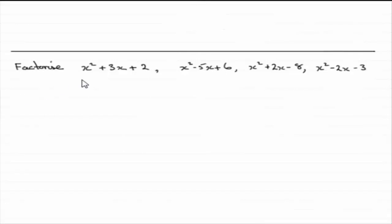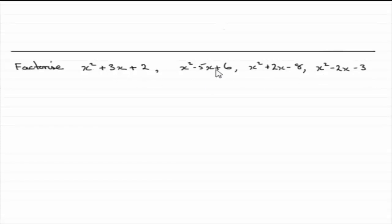In this tutorial, I want to show you how we factorize quadratic expressions that contain a first term which is always x squared. You'll notice they've got an x term and a constant on the end — three terms in fact. We often call these trinomials. So, how do we factorize expressions like this?